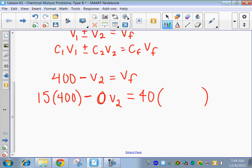My final volume, you guys, is always going to be what we subtracted here, or in other words, my final volume here gets plugged in right here. So I've got 400 minus V2. That's my final volume. Makes sense?